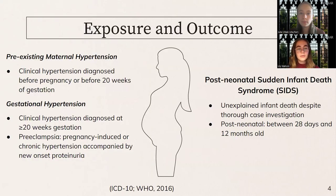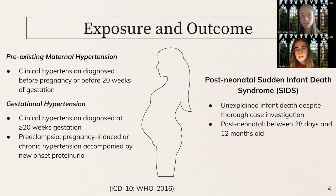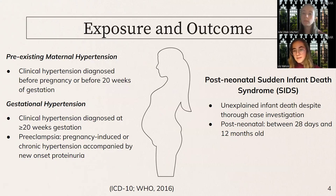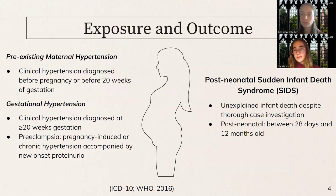Our exposure was classified as either pre-existing maternal hypertension or gestational, as indicated on the live birth certificate in the maternal health section. Pre-existing maternal hypertension must be clinical hypertension diagnosed at least 20 weeks before gestation or before pregnancy. Gestational hypertension was classified as either clinical hypertension diagnosed 20 weeks after gestation or pre-eclampsia. Our outcome, SIDS, is defined as unexplained infant death despite a thorough case investigation, indicated by code R95 on the cause of death, and must occur between 28 days after birth and 12 months of age.